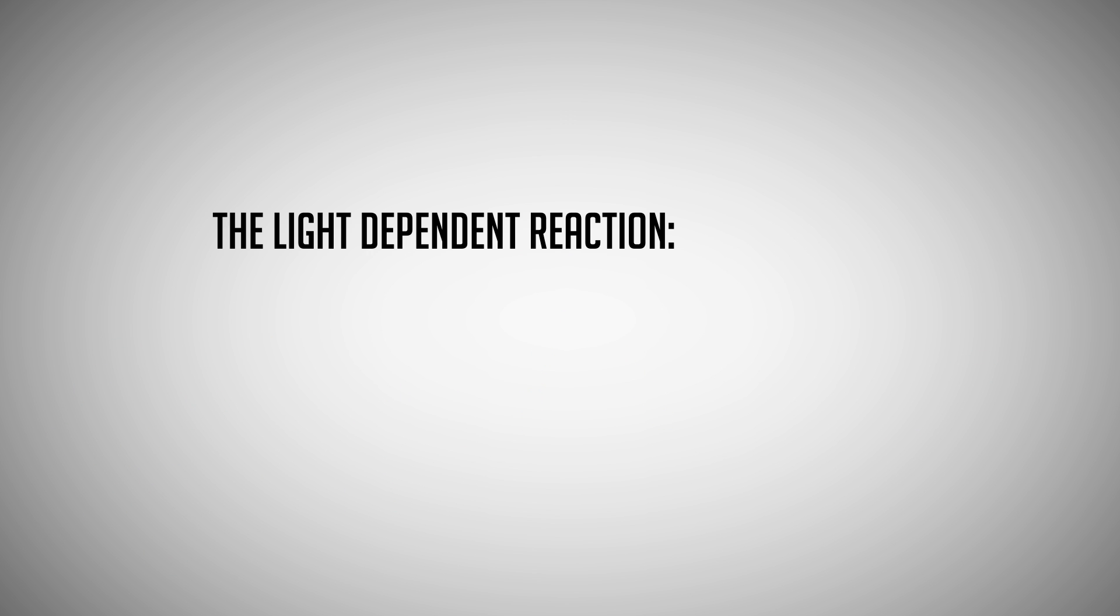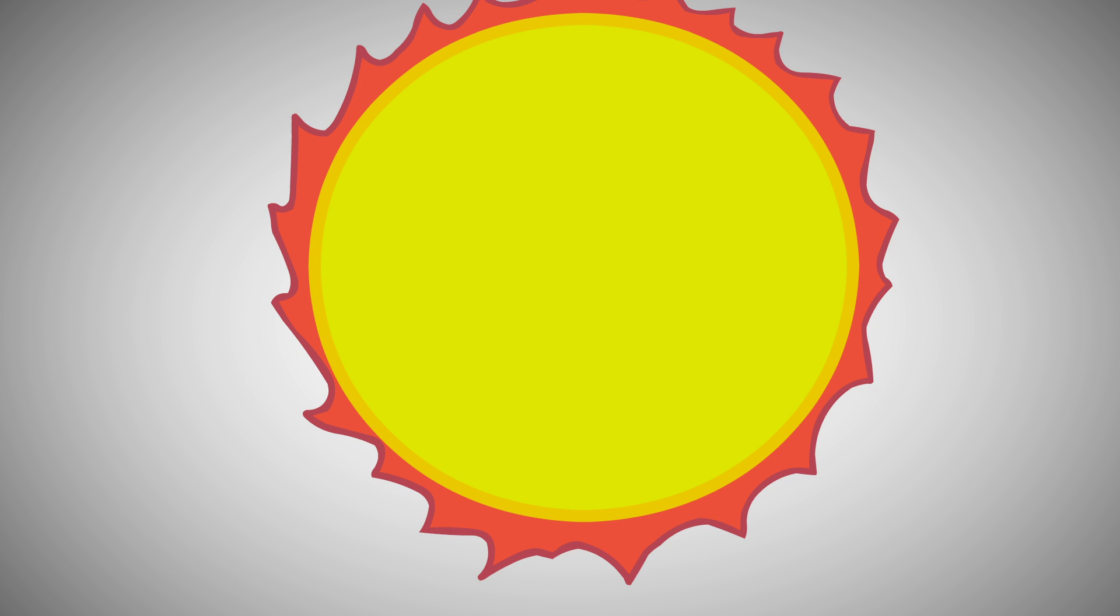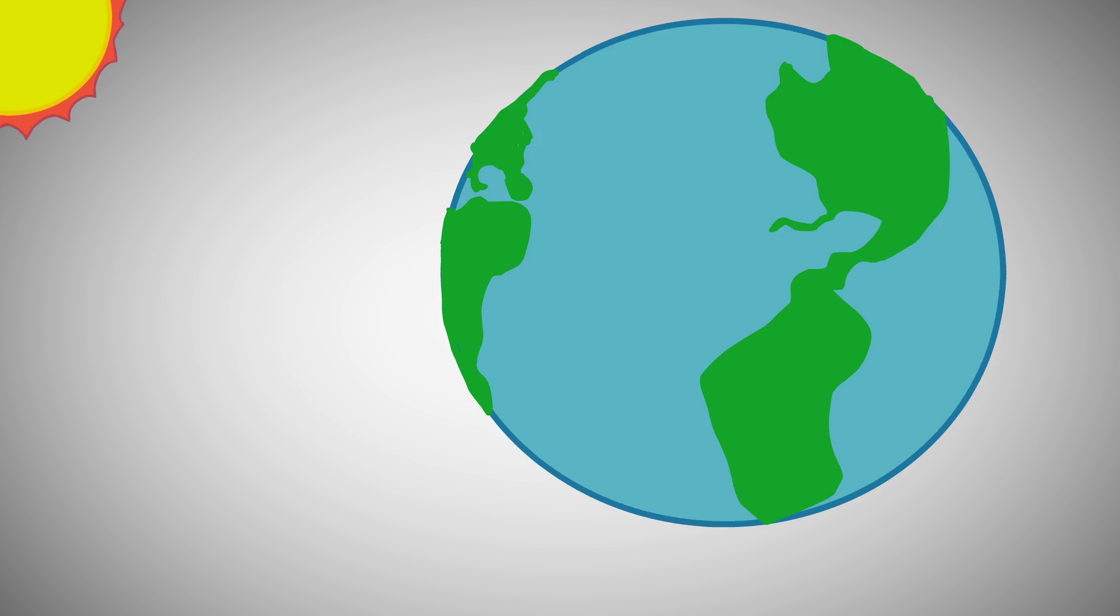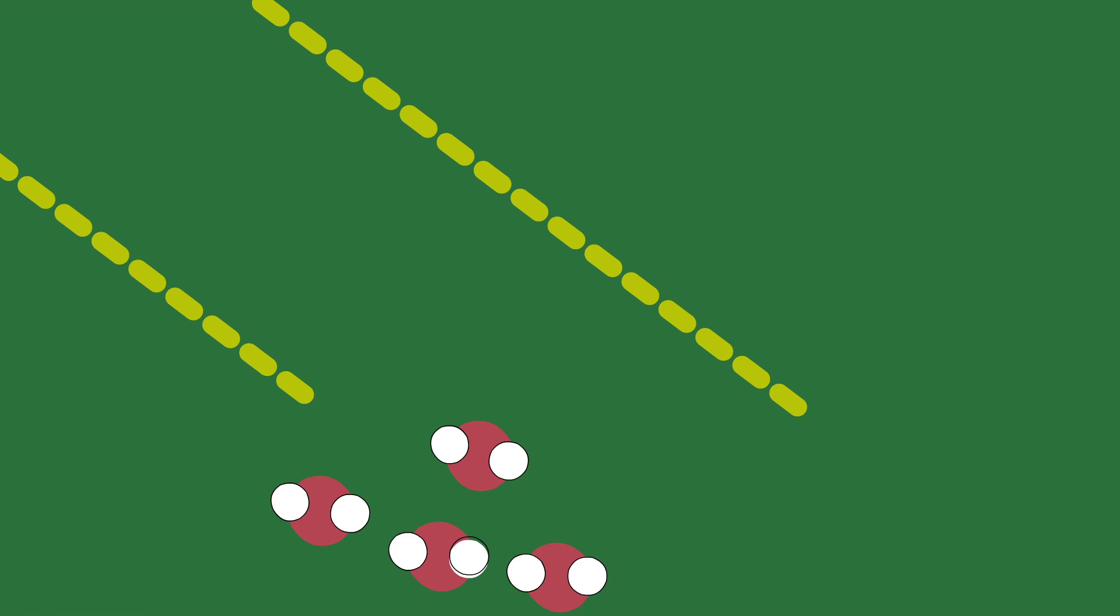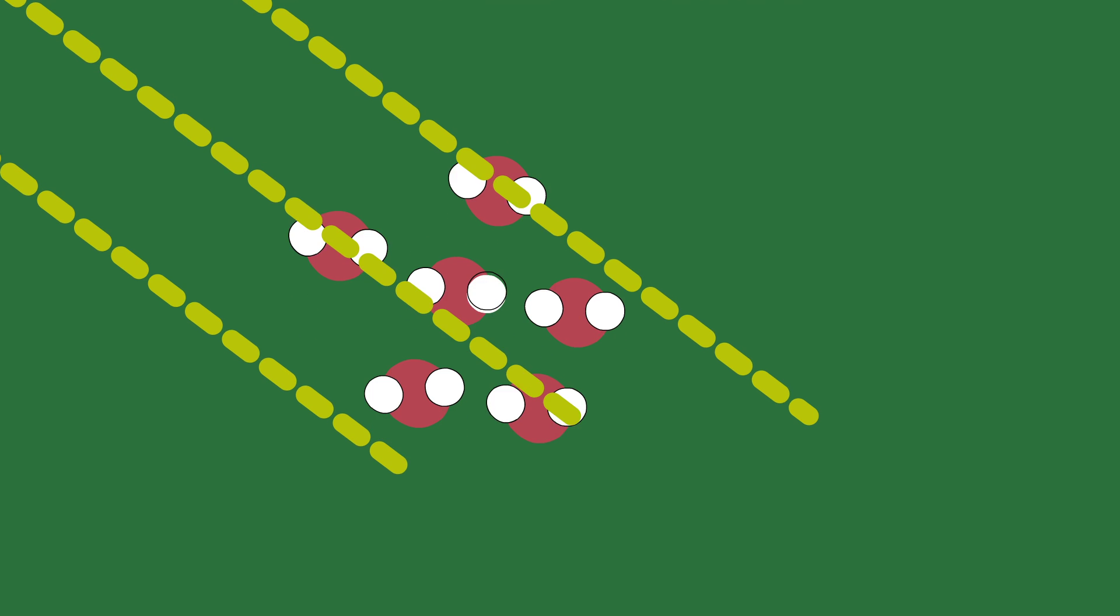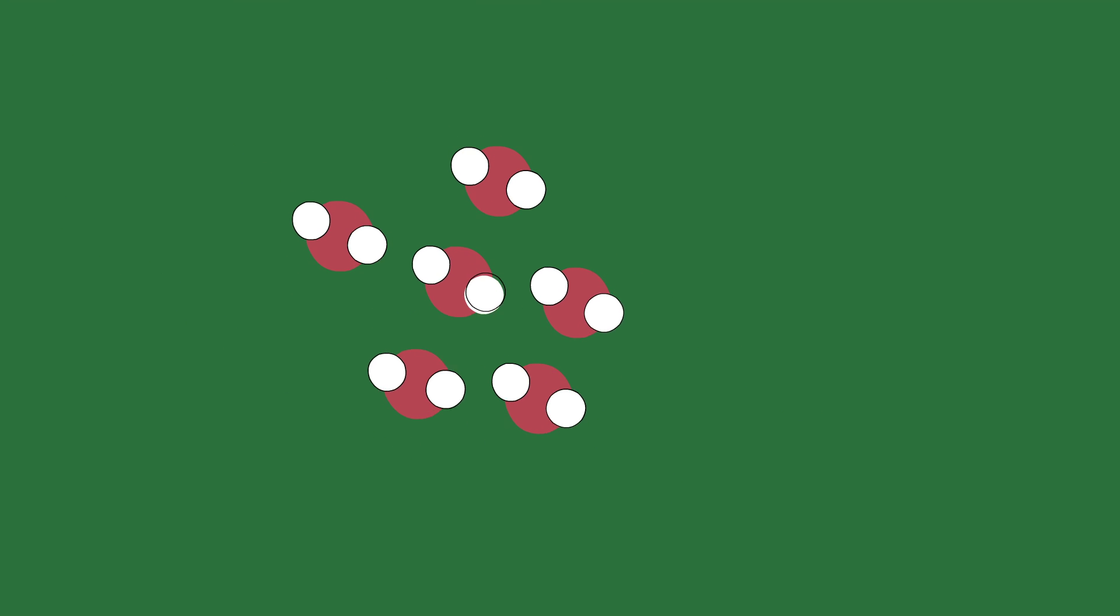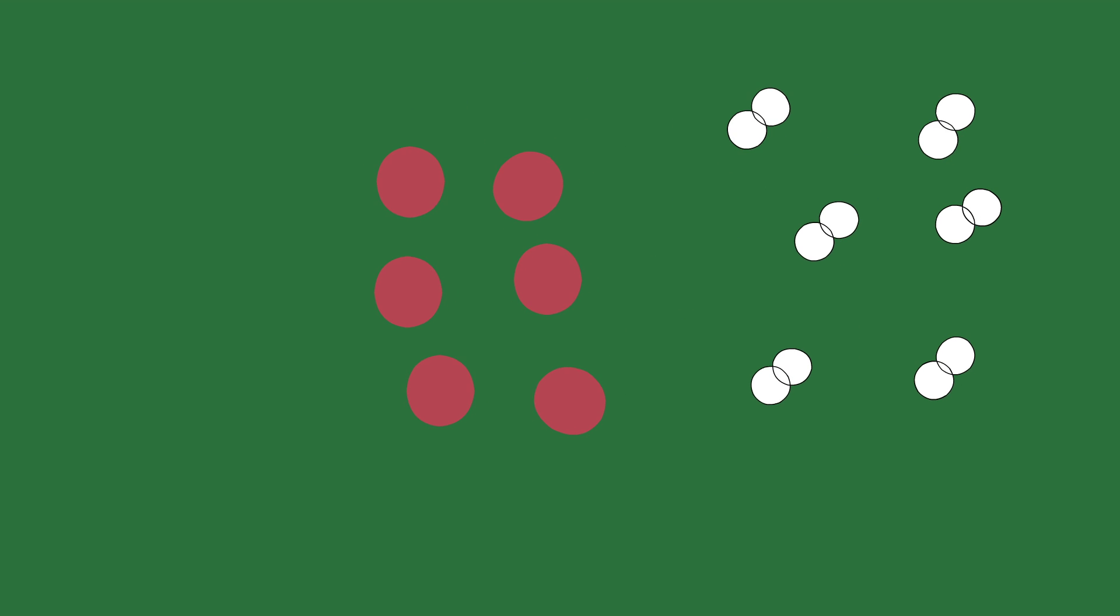Starting with the light-dependent reaction, sunlight travels from the sun to Earth, through the leaf, through the chloroplast, and into the thylakoid. Energy from the sun is called adenosine triphosphate, or ATP. While the sunlight comes in, water is also transported into the chloroplast. ATP splits the water, H2O, into hydrogen and oxygen.